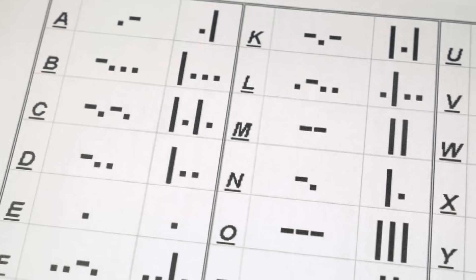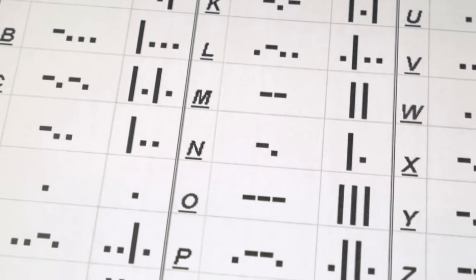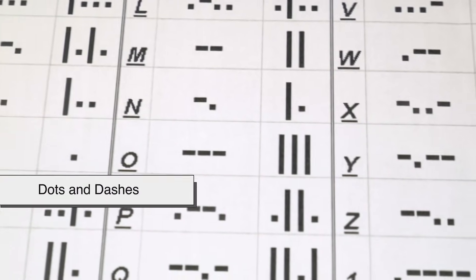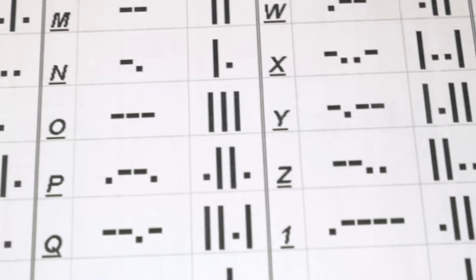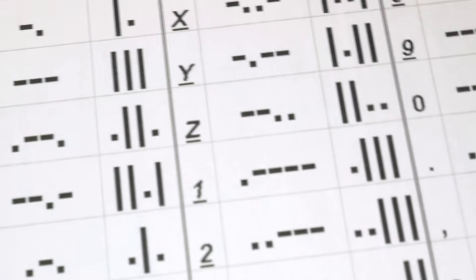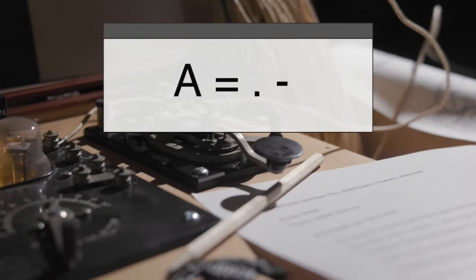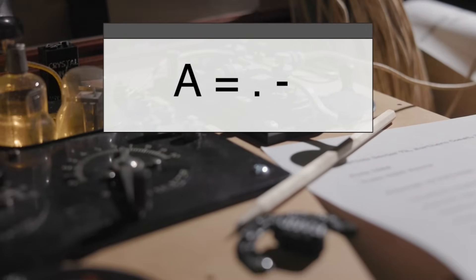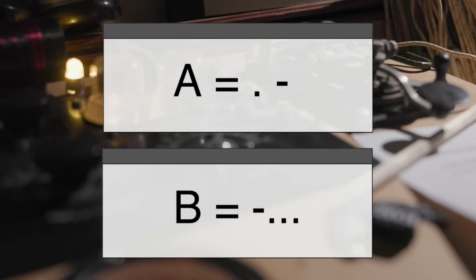At its core, Morse code assigns a unique combination of dots and dashes to each letter of the alphabet and each number from 0 to 9. For example, the letter A is represented by dot dash, while B is dash dot dot dot.